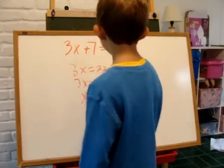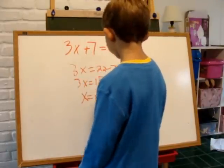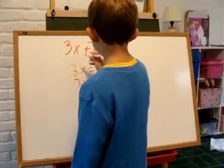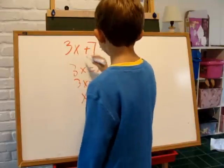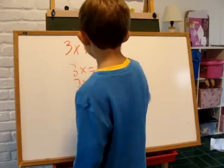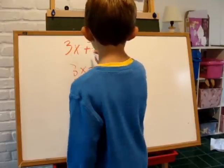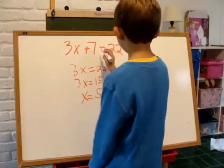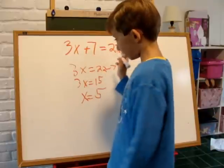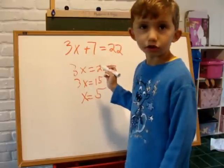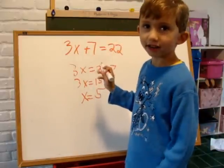And to check it, we plug in x as 5. So 3 times 5 is 15, plus 7 is 22. So it's right.